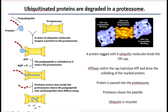Before ubiquitin has a chance to enter the proteasome, the bond connecting the ubiquitin to the protein to be degraded is cleaved. The ubiquitin is then released into the cytosol and recycled, reused.